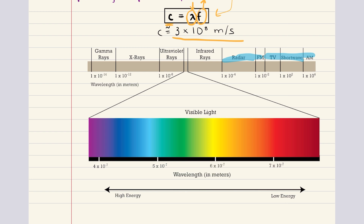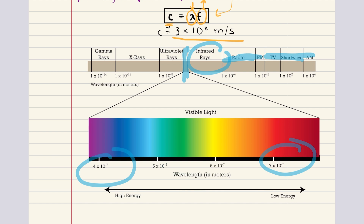Moving into shorter wavelengths, we reach the infrared region spanning from 1 millimeter to 700 nanometers. Infrared radiation is primarily associated with heat and used in applications like thermal imaging. Next, we have our visible light range — wavelengths detectable by the human eye — ranging from 700 nanometers, which we perceive as red, down to 400 nanometers, which we perceive as violet. This visible spectrum is a major focus of this chapter because it directly relates to human vision and practical optical applications.